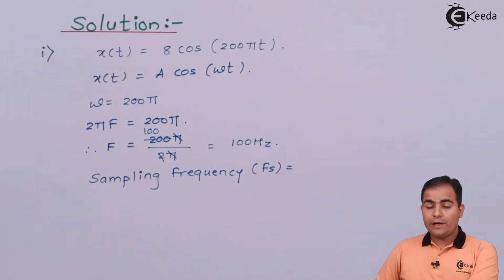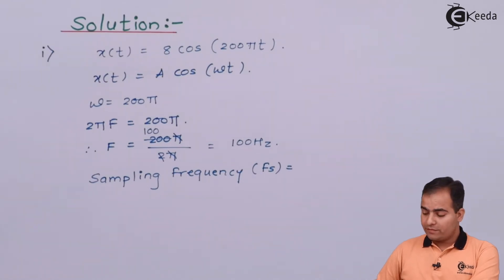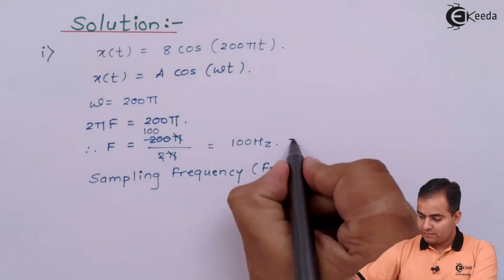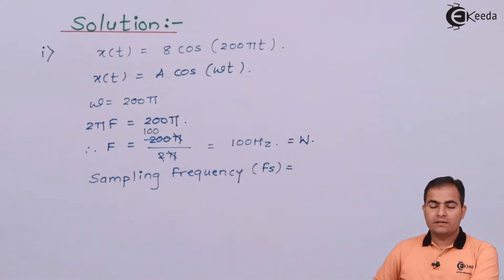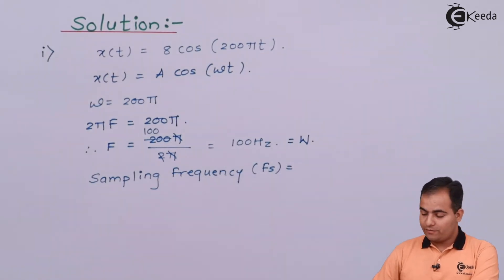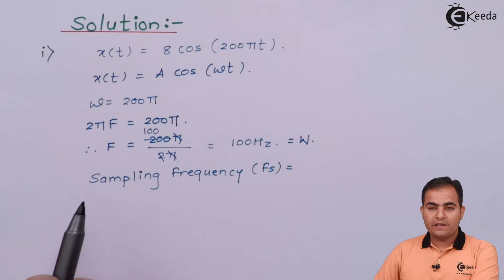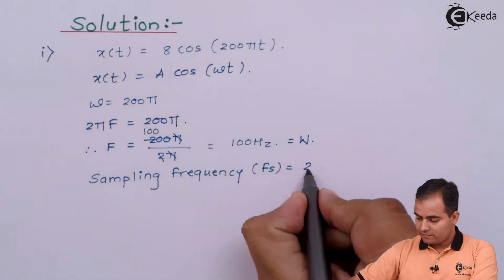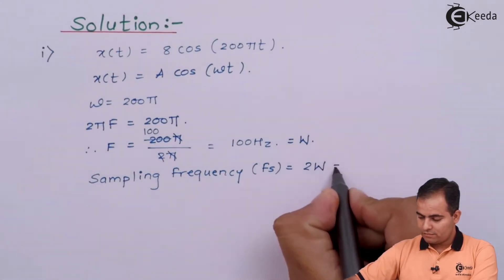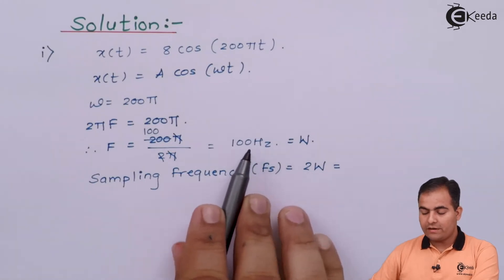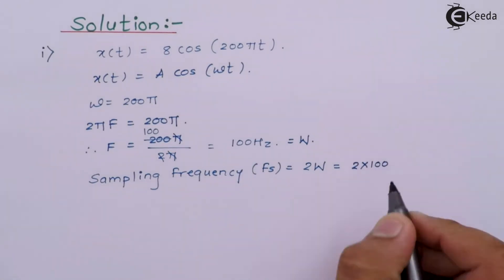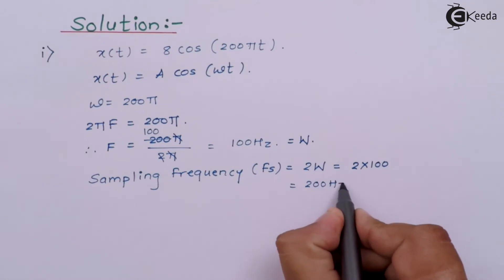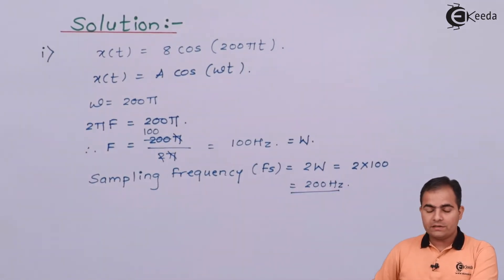According to the sampling theorem, the sampling frequency fs must be greater than or equal to 2·fm, or 2W, where W is the maximum frequency — here W = 100 Hz. So fs ≥ 2 × 100, which gives a minimum sampling frequency of 200 Hz.